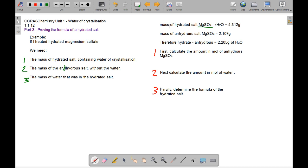The mass of the hydrated salt, MgSO4, is 4.312 grams. And the mass of the anhydrous salt, MgSO4, is 2.107 grams. Therefore, the hydrate minus anhydrous is 2.205 of H2O.